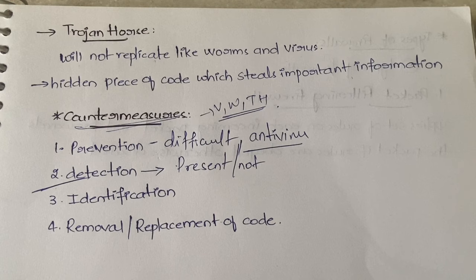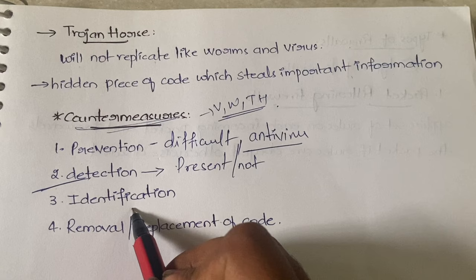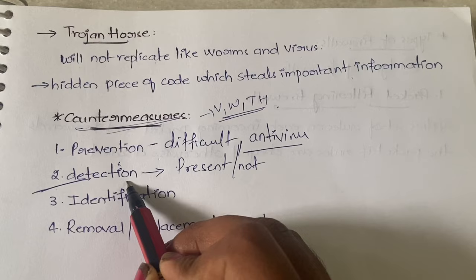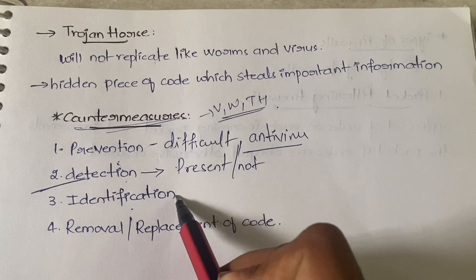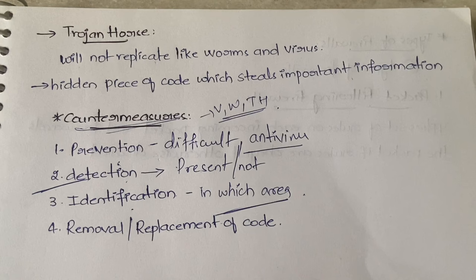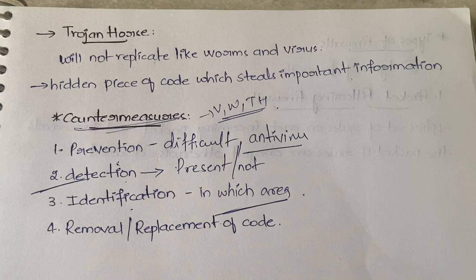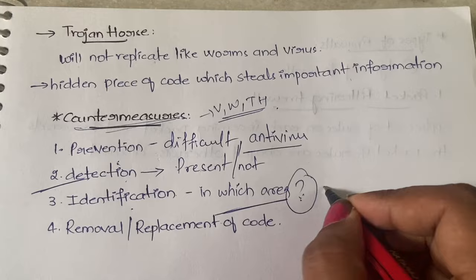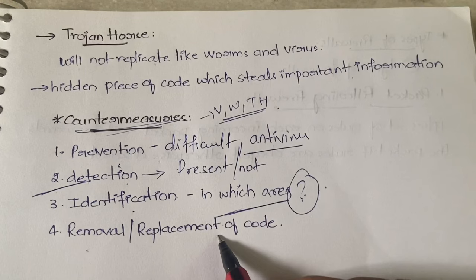After detection comes identification. Detection tells you whether a virus is present in your system, whereas identification tells you in which specific area the virus has infected — whether it's the hard disk, memory, input devices, output devices, or remote devices — wherever the infection has occurred.